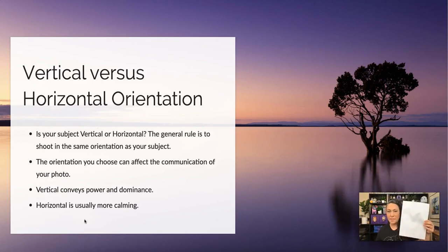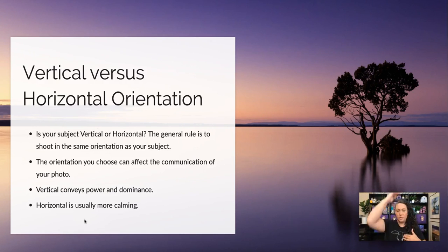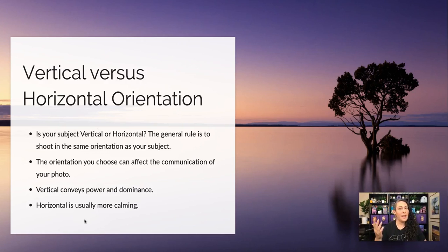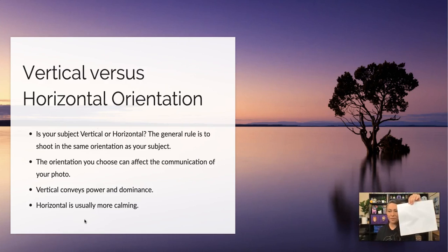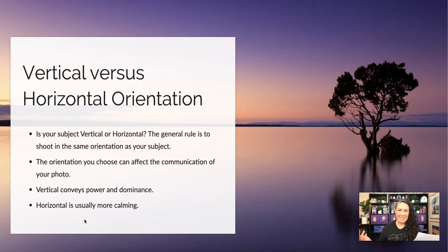Sometimes when printing you'll see that vertical is referred to as portrait — that's because if we're taking a portrait of someone, the main subject has more of a vertical look to them, so you use a vertical orientation. Whereas horizontal, sometimes referred to as landscape, would be used when you have something more of a horizontal view, like a landscape.